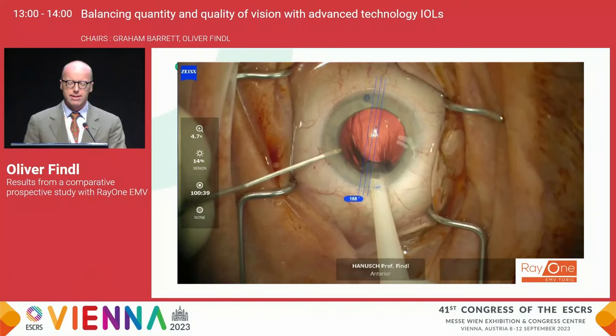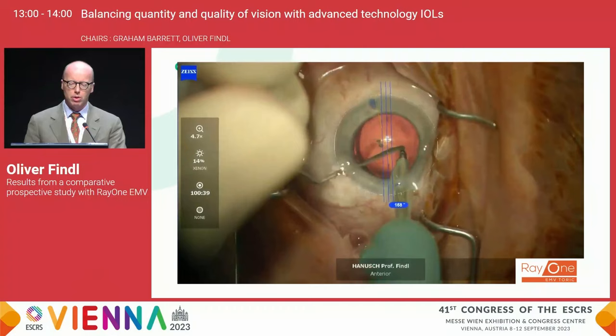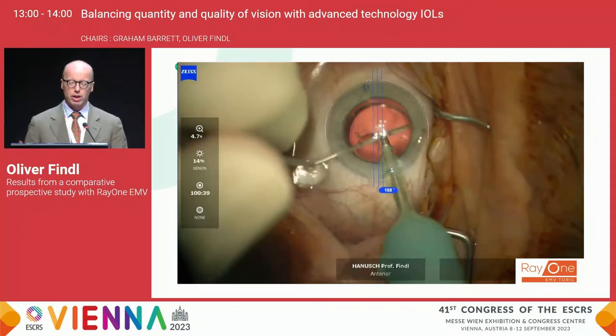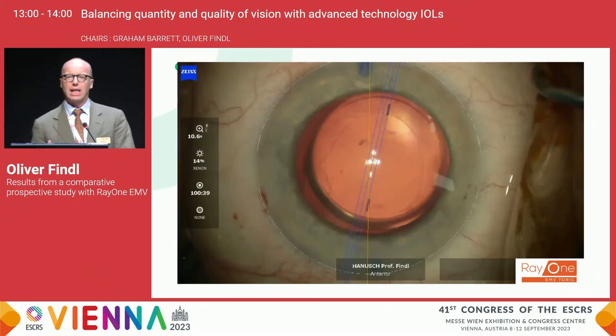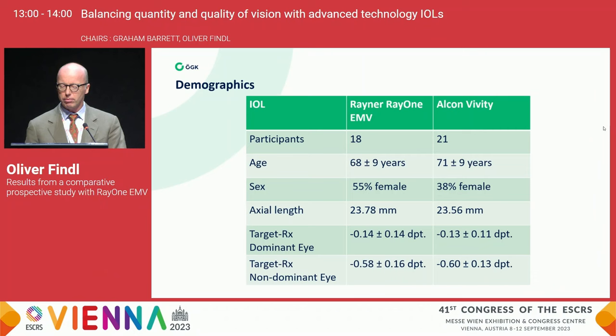The Rayner EMV is a pre-loaded hydrophilic acrylic lens with a very long track record concerning the material. We also incorporated the EMV toric, which became available during our trial. As you can see in this image, you do not see any diffractive elements because there are none. You also don't see any central zones of any kind — it really does look from the outside like a monofocal lens.